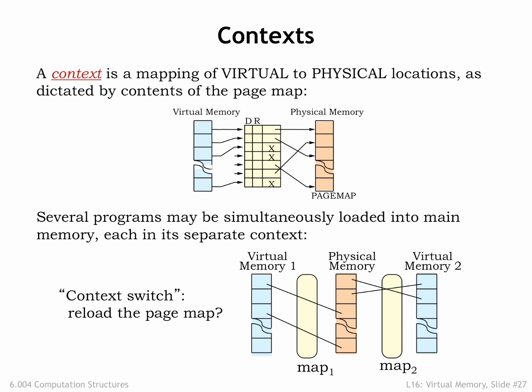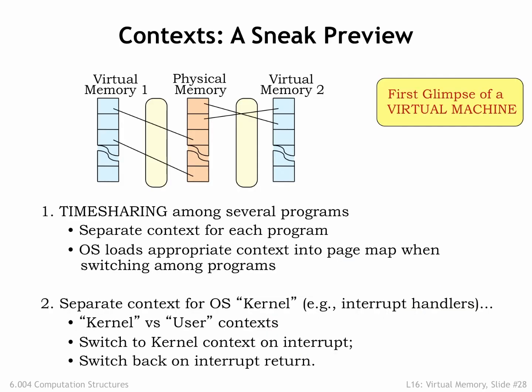We need to switch contexts when switching programs, which is accomplished by reloading the page map. In a time-sharing system, the CPU will periodically switch from running one program to another, giving the illusion that multiple programs are each running on their own virtual machine. This is accomplished by switching contexts when switching the CPU state to the next program.